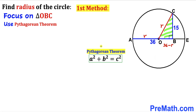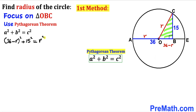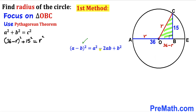Now we apply the Pythagorean theorem: A² + B² = C². In our triangle, OC is the hypotenuse, so we get (36 − R)² + 15² = R². Expanding using the identity (A − B)² = A² − 2AB + B², the left side becomes 1296 − 72R + R² + 225 = R².